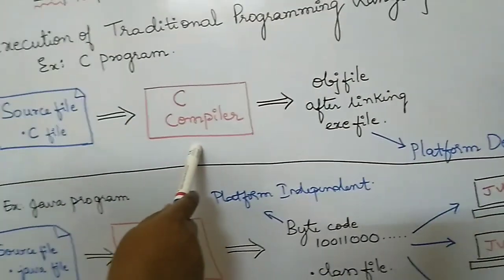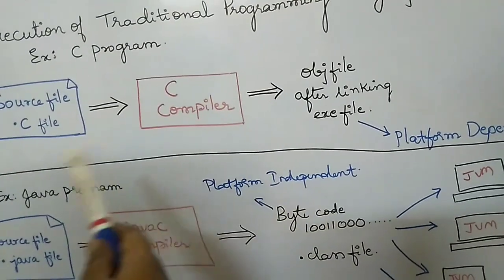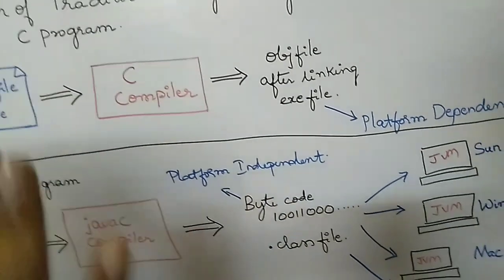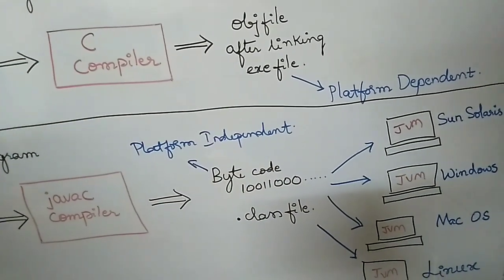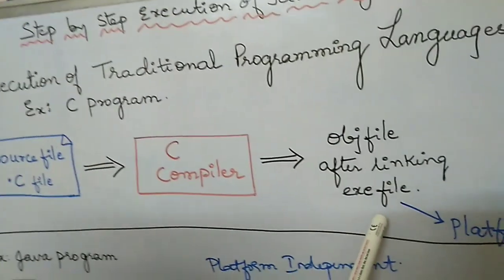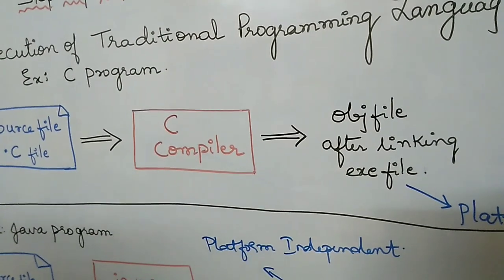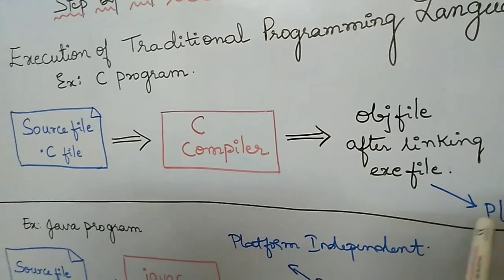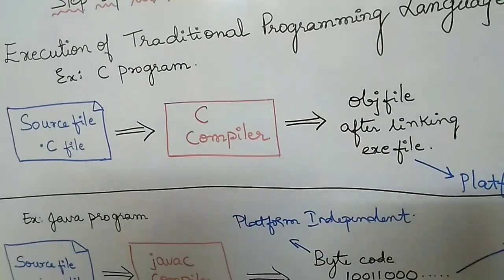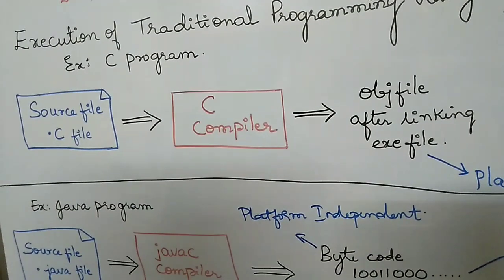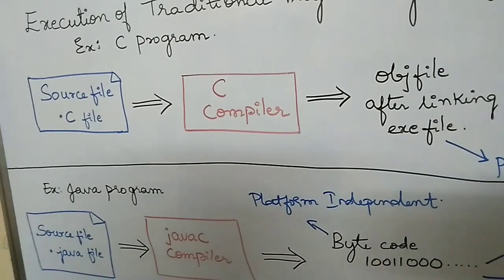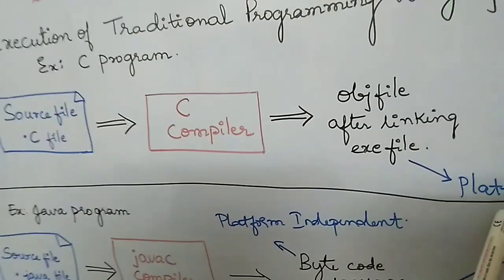If the compiler is converting the code on a Windows operating system, then the exe file will execute only on Windows. If it is converting to the machine code of Mac OS, then the exe file will execute only on Mac OS. This is called platform dependent. So if you take that exe file onto Mac OS and it was generated for Windows, it will not work on Mac OS.